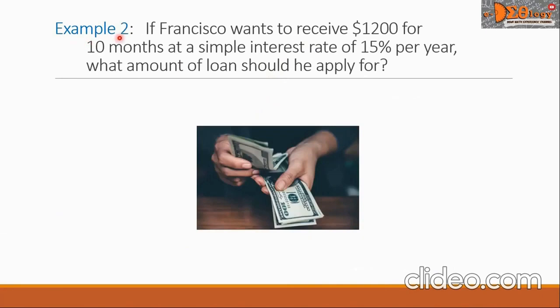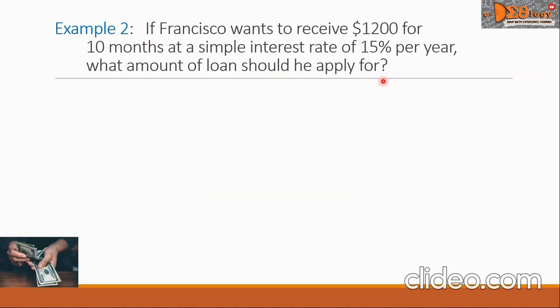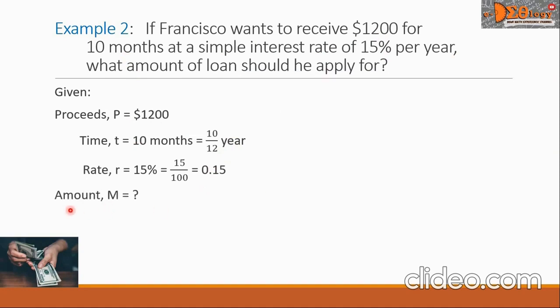Let us have this example two. If Francisco wants to receive $1,200 for 10 months at a simple interest rate of 15% per year, what amount of loan should he apply for? Let us first write the given. This time, the proceeds P is equal to $1,200. Next is the time, and that is 10 months, that we converted into a year, so it becomes 10 over 12. Next is the rate, and that is the 15% that we converted into decimal. In this problem, what we want to know is the amount M.